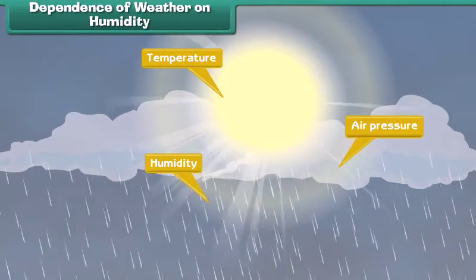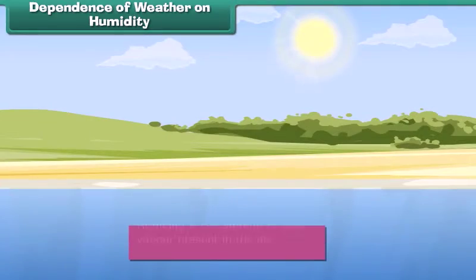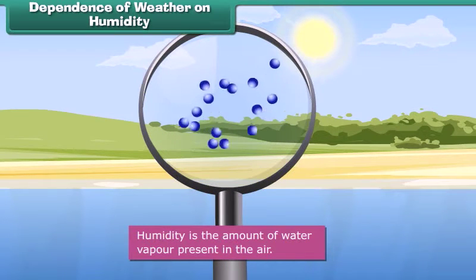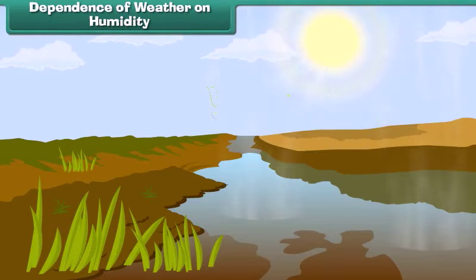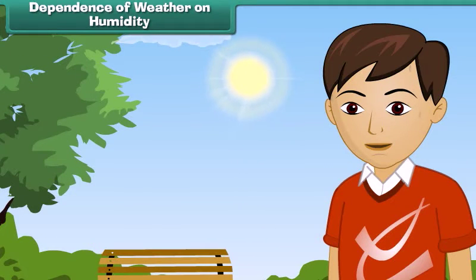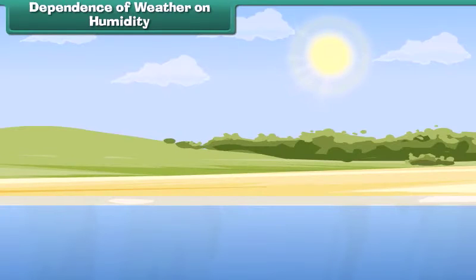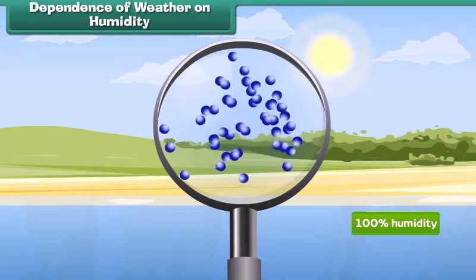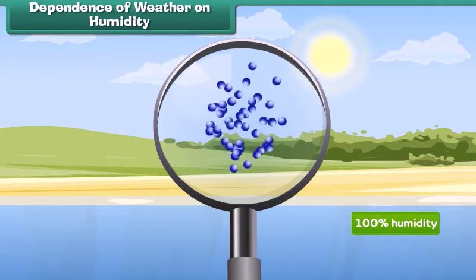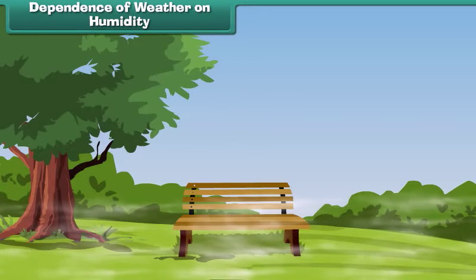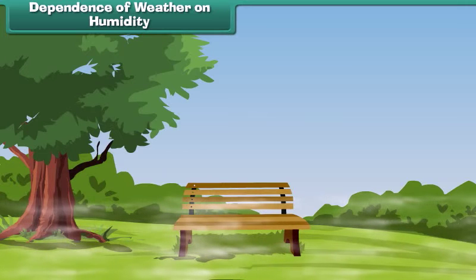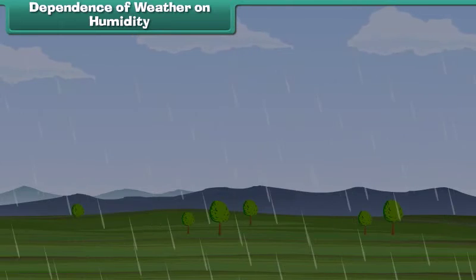Another important factor influencing weather is humidity. Humidity is the amount of water vapour present in the air. The air around us is full of water. You can usually see water evaporating from lakes, oceans, rivers and even from trees. When the humidity increases, we sweat a lot and feel sticky and uncomfortable. When the humidity in the air reaches nearly 100%, the air can't hold too much vapour, and if the temperature falls, water vapours return to their original liquid state. As condensation happens close to the ground, mist and fog are produced, and very high up in the atmosphere, clouds are formed. Eventually, water from the clouds returns to the earth in the form of rain, snow or hail.